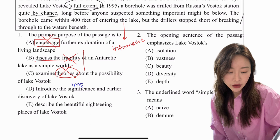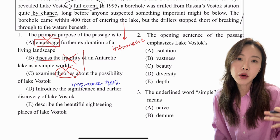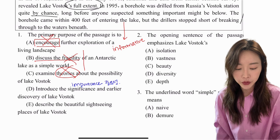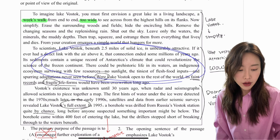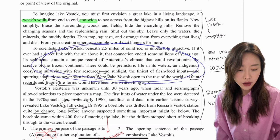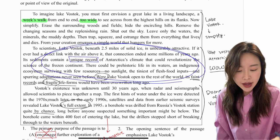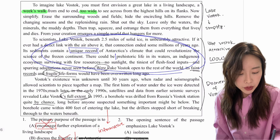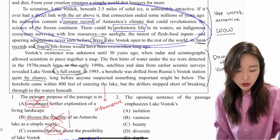Option D: 'Introduce the significance and early discovery of Lake Vostok.' Significance means importance — the implication and influence something carries. Did we talk about both the significance and the discovery of Lake Vostok? Yes. The significance was in the second paragraph: the lake has prehistoric life forms in its sediments, a unique record that could revolutionize science. And the early discovery was covered in the third paragraph. So D is correct.